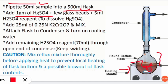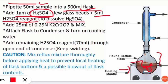Glass beads are used to control the violent explosions that can occur during heating — this is an important exam question. Next, add 5 ml of H₂SO₄ reagent, which is sulfuric acid reagent. Note that it is written 'reagent,' not plain H₂SO₄, because it contains 5.5 grams of Ag₂SO₄ (silver sulfate) dissolved in one liter of concentrated H₂SO₄.